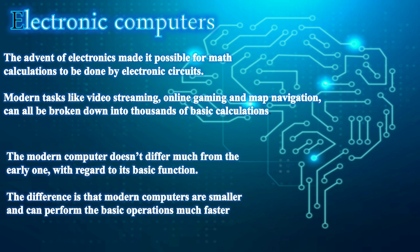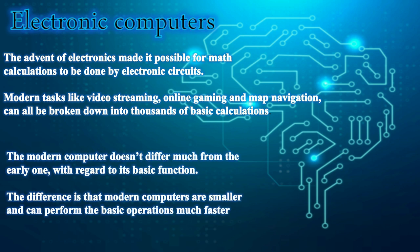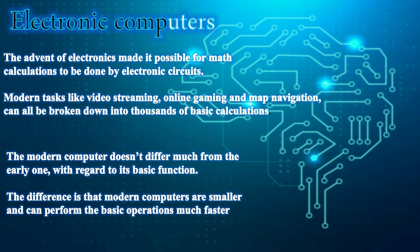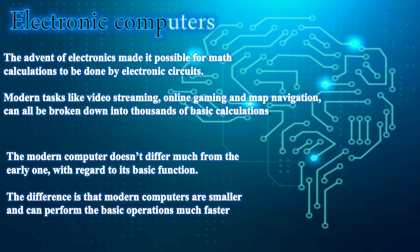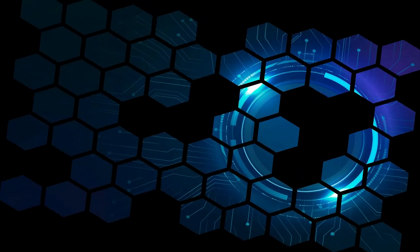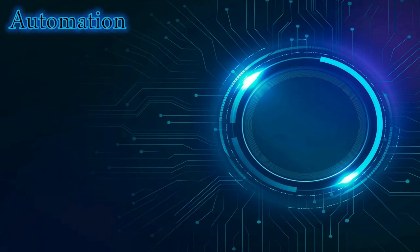Modern tasks like video streaming, online gaming, and map navigation can all be broken down into thousands of basic calculations. The modern computer doesn't differ much from the earlier one in terms of basic function. The difference is that modern computers are smaller and can perform basic operations much faster. Earlier computers were very large, had limited capacity, and were much slower than today's computers.